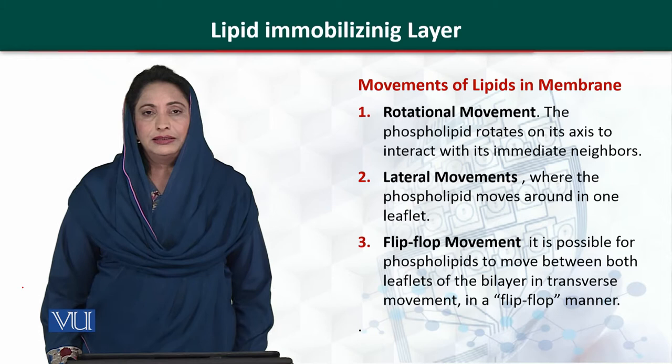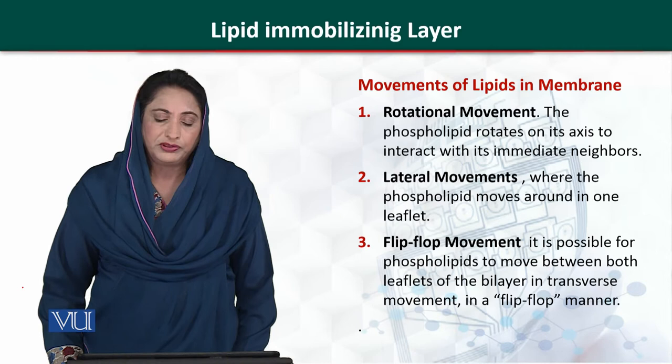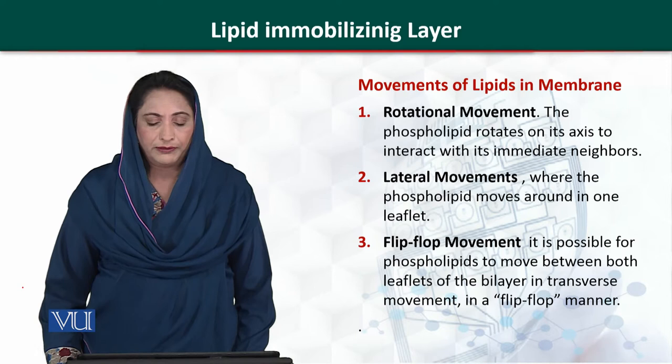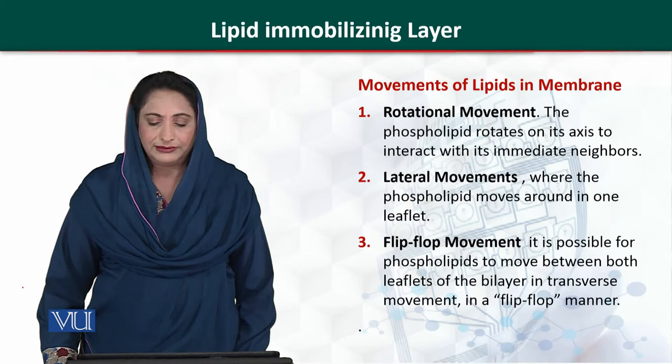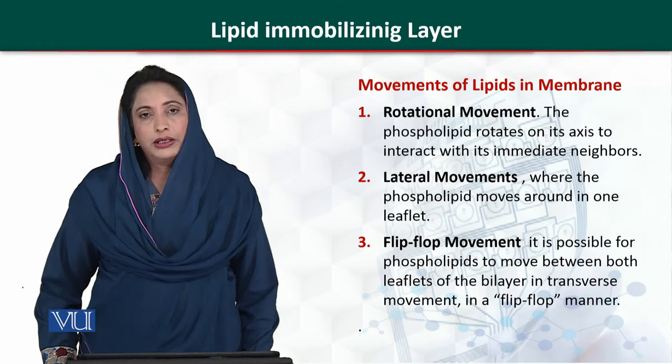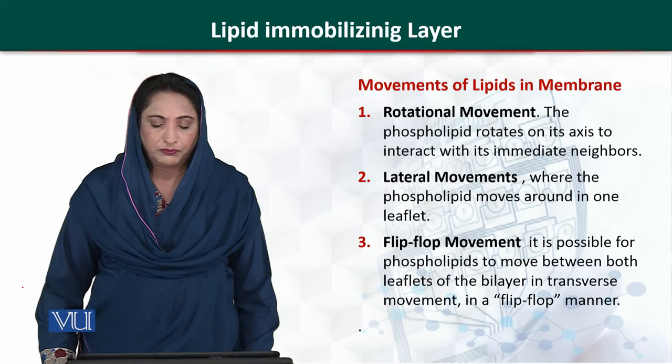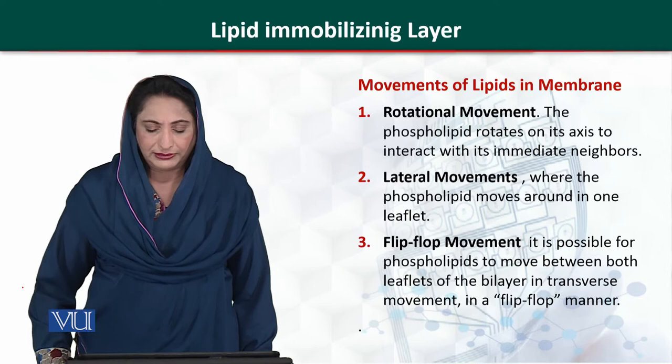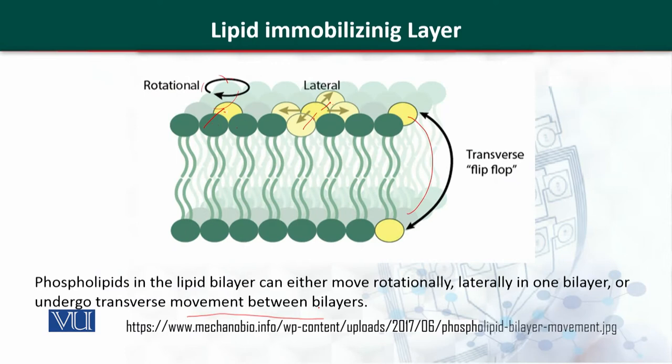Now, the movements of lipids in the membranes. There are three types of movements of lipids in the membrane. One is known as rotational movement, the second type is lateral movement, and the third type is flip-flop movement. Rotational movement is for phospholipids, in which they rotate around their axis and interact with their immediate molecules. Lateral movement is where the phospholipid moves around in one leaflet of the lipid. Flip-flop movement allows the phospholipid to move between the leaflets of the bilayers — transverse movement between layers.